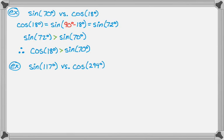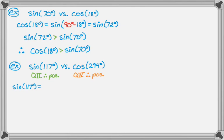Example two: compare sine of 117 degrees to cosine of 294 degrees. 117 degrees is in quadrant two where sine is positive, so sine of 117 is a positive number. 294 is in the fourth quadrant where cosine is positive. To find reference angles: for sine of 117, use 180 minus 117 to get sine of 63 degrees. For cosine of 294, use 360 minus 294 to get cosine of 66 degrees.